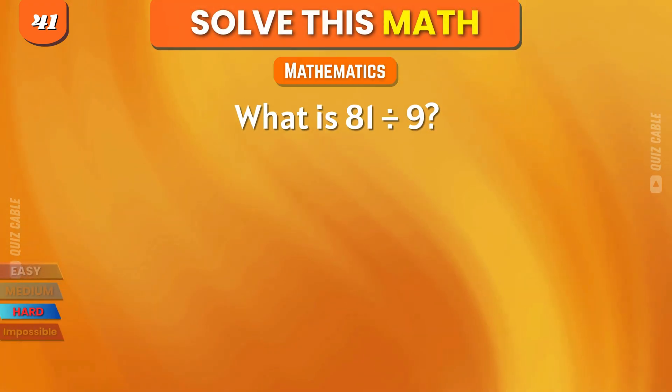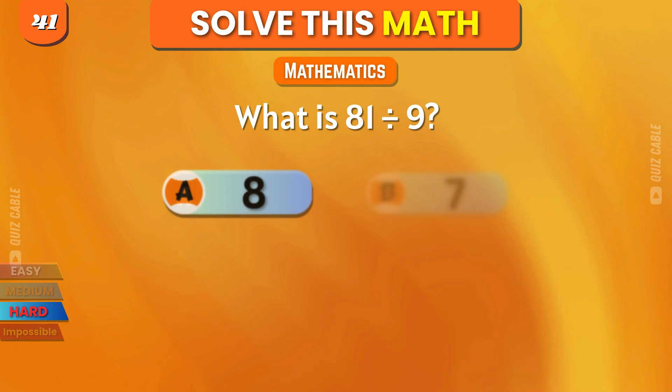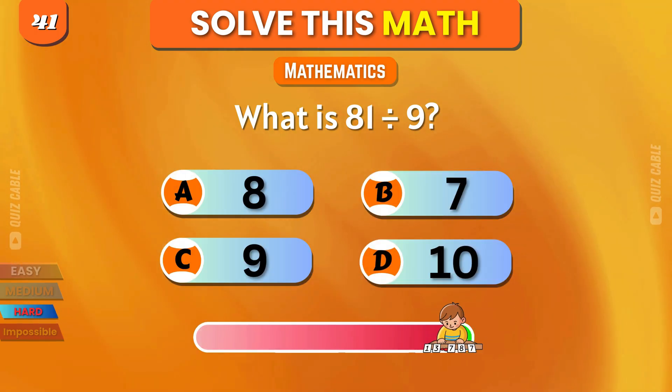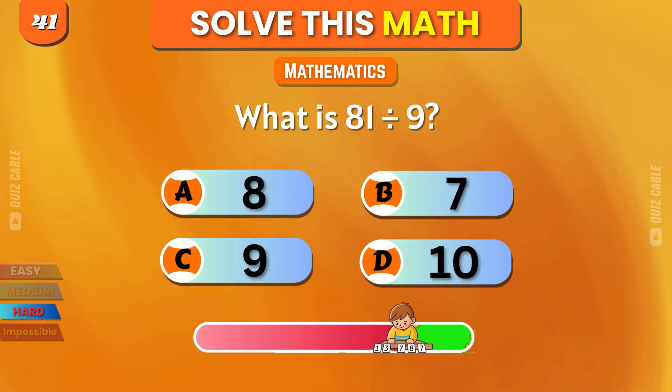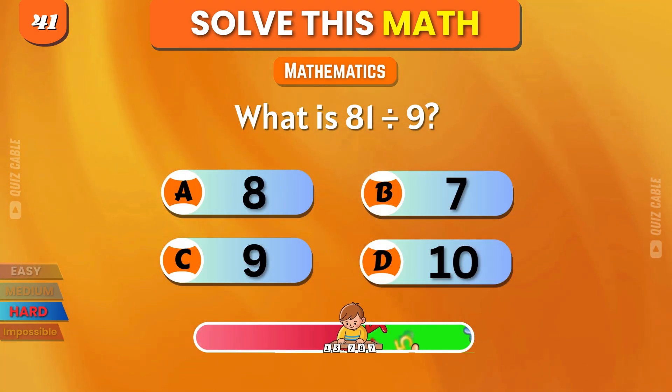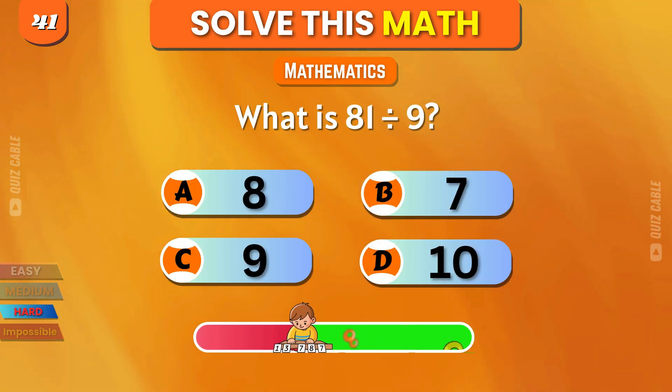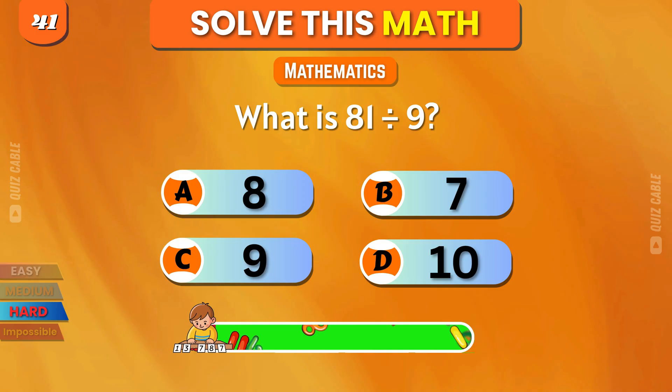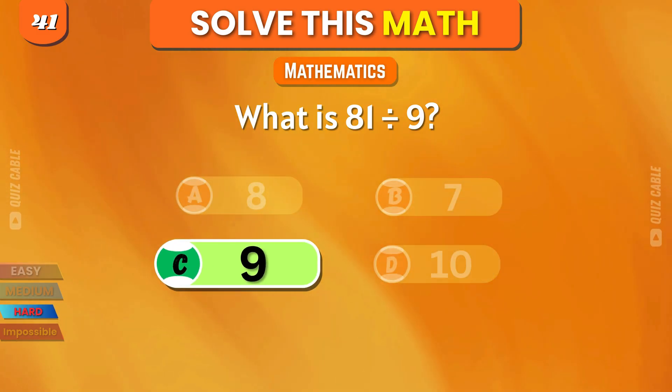What is 81 divided by 9? 8, 7, 9, 10. That's right, 9.